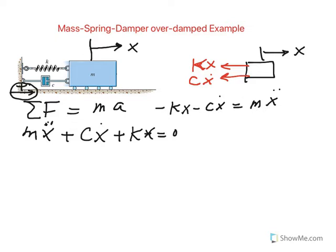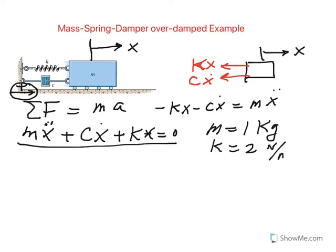Now let me assign some values here. I'm going to use metric units. The mass is simply 1 kilogram, the spring constant is 2 newtons per meter, and the damping coefficient is 3 newton seconds per meter.